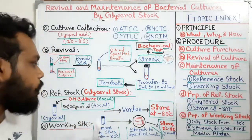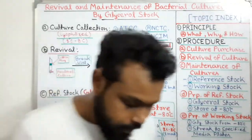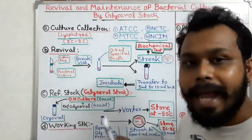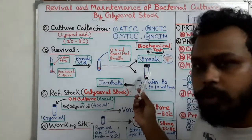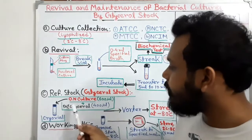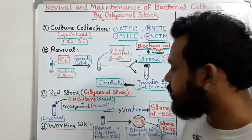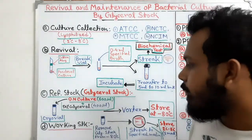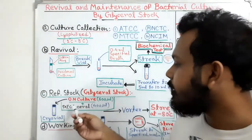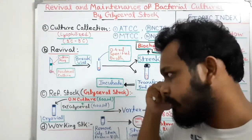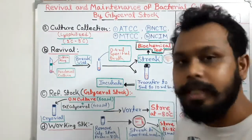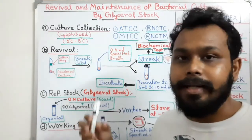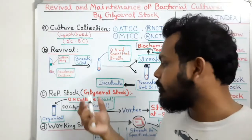The reference stock is our glycerol stock. To prepare it, we take a cryovial and add 600 microliters of overnight growth culture and 400 microliters of 50% glycerol. The final concentration of glycerol will be 25 to 30%. Many people use different glycerol percentages — 10%, 15%, 20%, 25%, or 30% — depending on their requirements for a particular bacterial culture.